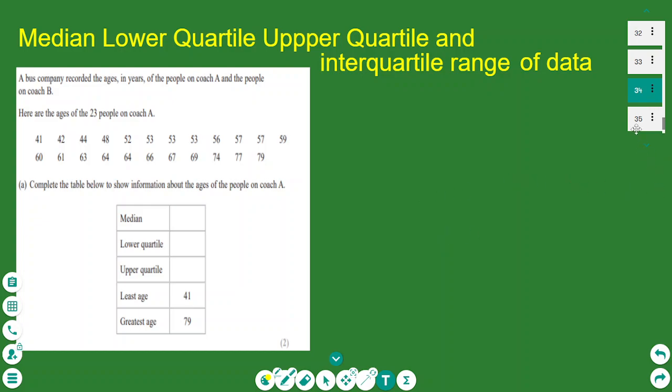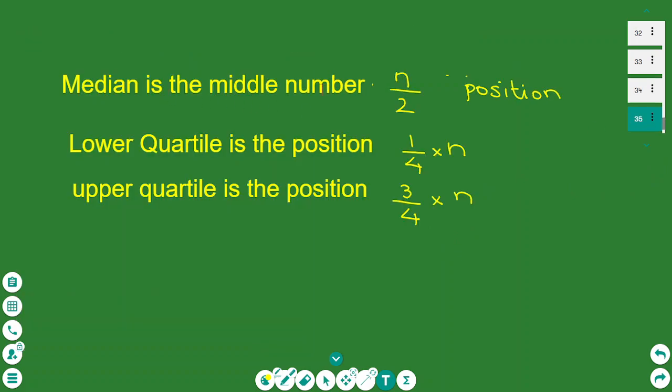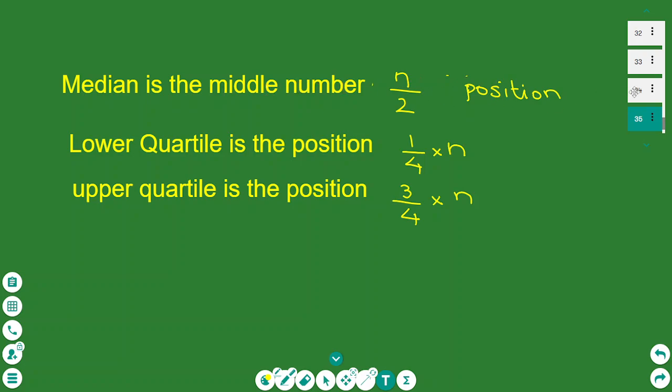Let's see what is the median. The median is the middle value. It's the position that lies at half of the data. So it's the middle number. And because the total numbers are odd, 23 is an odd number, there is only one number in the middle.